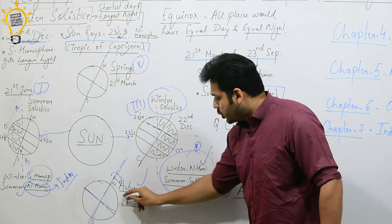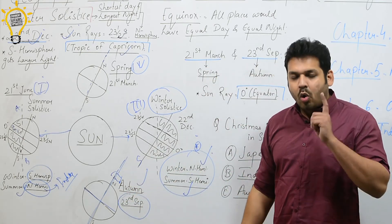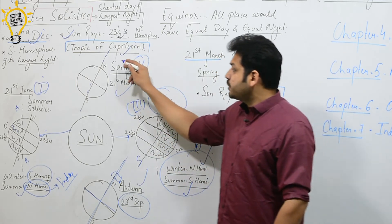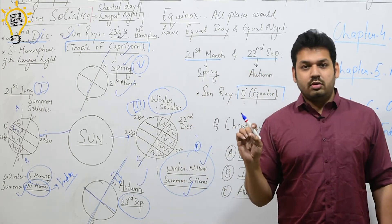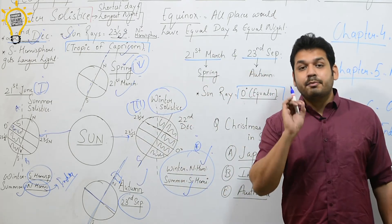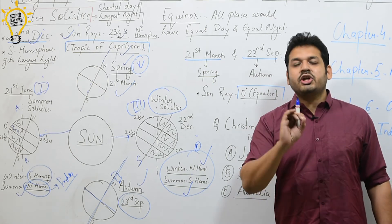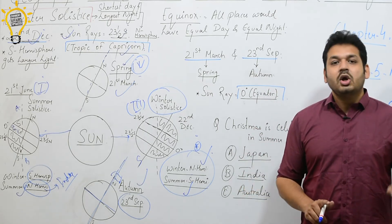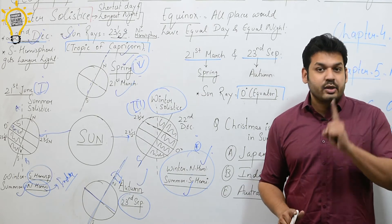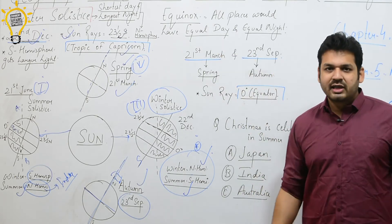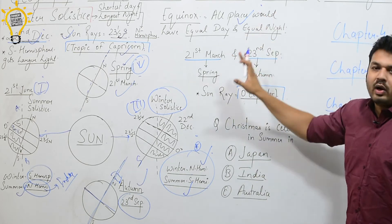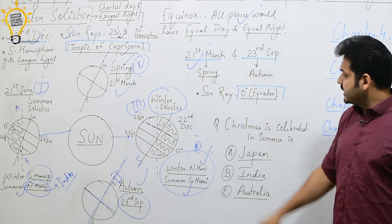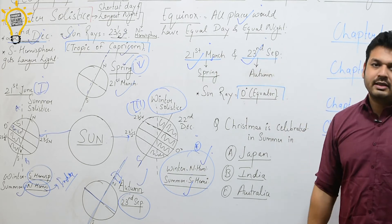Autumn equinox is on 23rd September, when the sun is overhead at the equator. Spring equinox is on 21st March, when the sun is again overhead at the equator. In both spring and autumn, the sun is over the equator. When the sun is over the equator, the whole earth has equal day and equal night — that is 12 hours day and 12 hours night. This is called equinox.